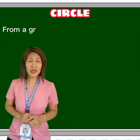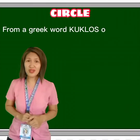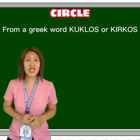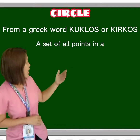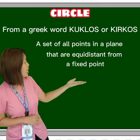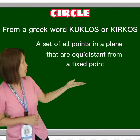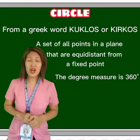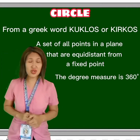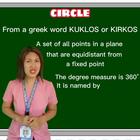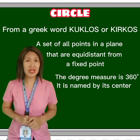Circle is from a Greek word, kokus or kerkus, which means hoop or ring. It is defined as a set of all points in a plane equidistant from a fixed point. The degree measure of a circle is 360 degrees.